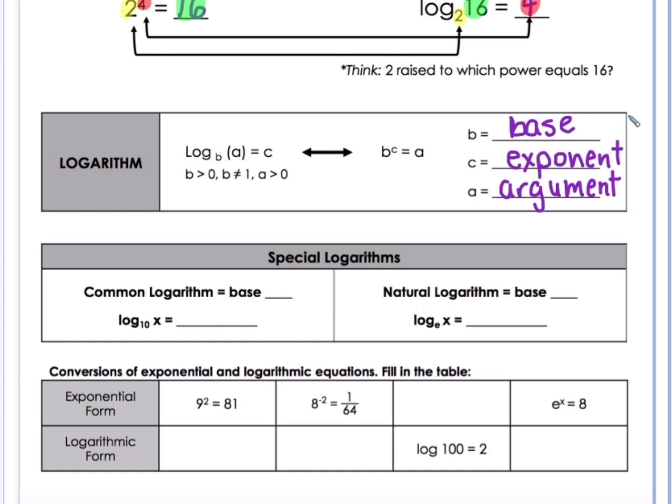We also have some special logarithms. Common logarithm equals base 10. So log base 10 of x will also be mainly viewed as log x. If you see that, assume it's base 10. Just like when we see square roots, we don't always put the 2 as the index, but we know that it is the square root. This is going to be known as base 10. And a natural log has a base of e. Log base e of x would just be written as natural log x. We'll talk about in a minute what e actually represents.